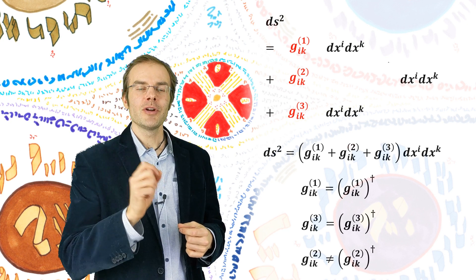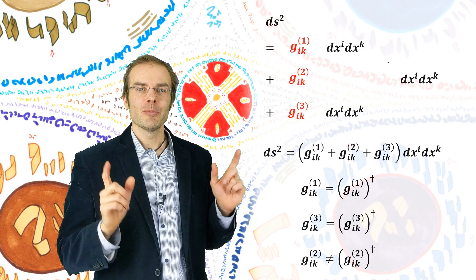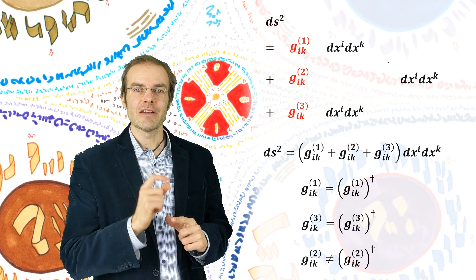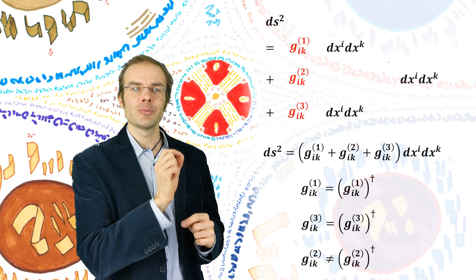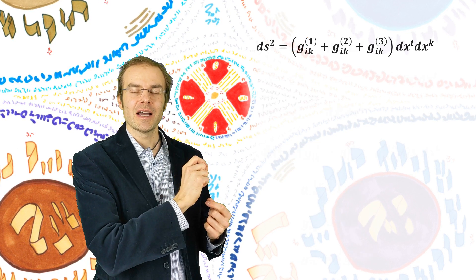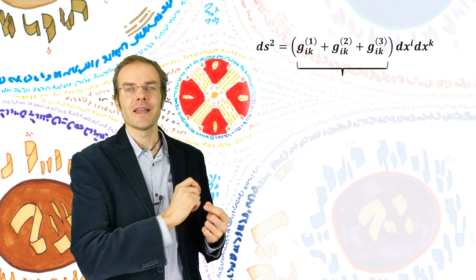Because if it were non-Hermitian, the anti-Hermitian components would cancel each other out. Therefore, g2 must be assumed non-Hermitian, and so must the metric tensor, which Heim called the fundamental tensor.